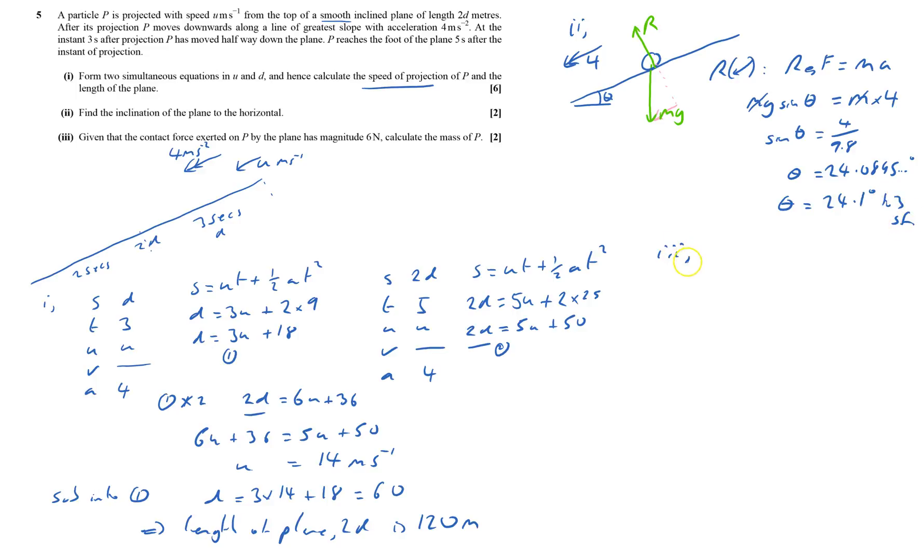And then part 3. Now it says the contact force exerted by p on the plane is 6 newtons, and that means that equals 6 newtons, and there's no friction, so that is the normal contact force, it's the only contact force.